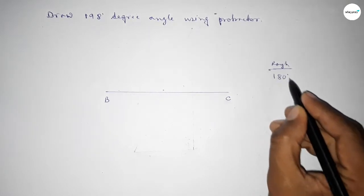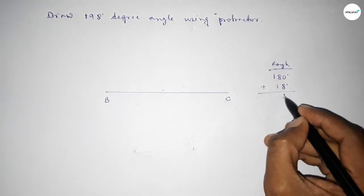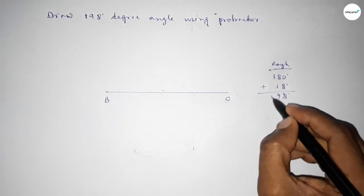If we add 18 degree angle with 180 degrees, then we can get 198. So this is 180 plus 18 equals 198.